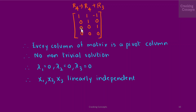We see that every column of the matrix is a pivot column. Therefore there is no non-trivial solution and we require lambda_1 = 0, lambda_2 = 0, and lambda_3 = 0 to solve the equation system. Hence the vectors x1, x2, x3 are linearly independent.